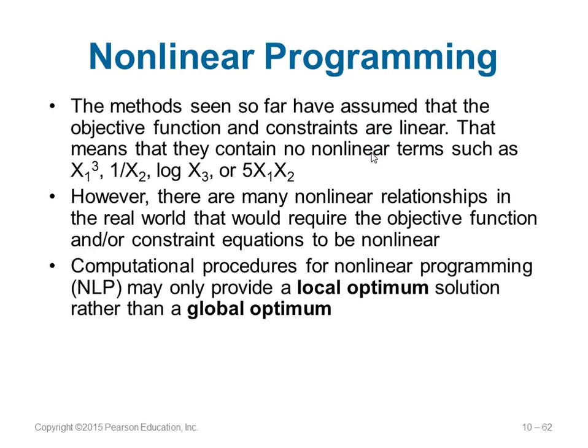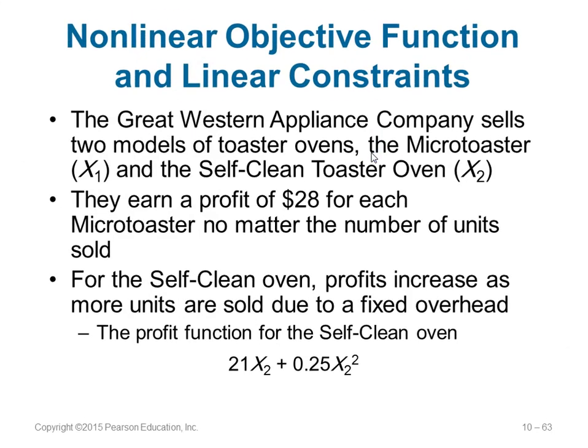The last topic in this chapter is non-linear programming. All previous methods assumed linear objective functions and constraints, but sometimes variables appear as x1³, 1/x2, log(x3), or x1·x2 — non-linear relationships that appear in real-world problems. Non-linearity can be in the constraint, the objective function, or both. Computational procedures for non-linear programming may only produce a local optimal solution, not always a global optimal.